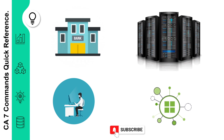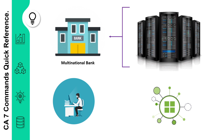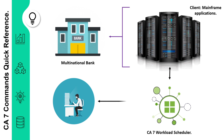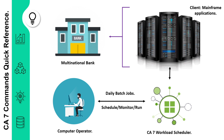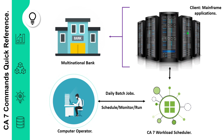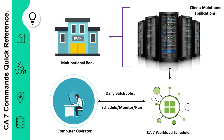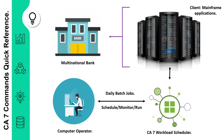Let's say you're working for a multinational bank that is using IBM mainframe to host its core banking applications, and they're using CA7 workload scheduler to schedule, run and monitor daily batch jobs, which is used to process billions of transactions that happen throughout the day. As an operator, you should know how to use the CA7 LQ command to view the status of jobs residing in different queues of CA7.